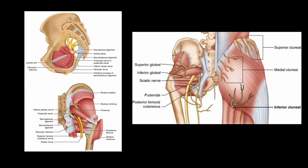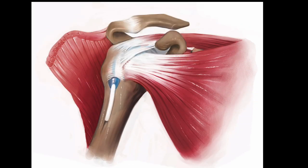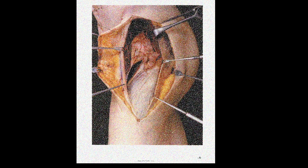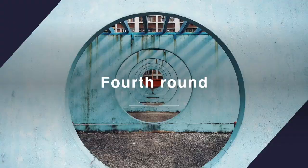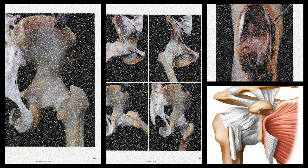You will learn more about deep pudendal nerve branches if you remove the sacrotuberous and sacrospinous ligaments. You will study the rotator cuff and biceps tendon in the shoulder. If you remove the gluteus medius and minimus, you can observe the hip joint capsule and ligaments. In the fourth round, you will observe the meniscus, posterior cruciate ligament, and coracohumeral ligament.